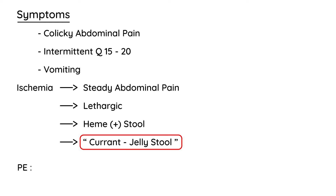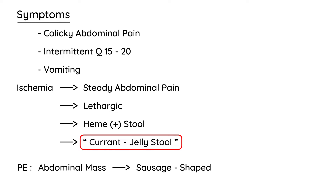Another important keyword you'll find on clinical vignettes about intussusception: on physical exam, the abdominal mass that can be palpated is given the special term 'sausage-shaped mass.' That is also an important buzzword.